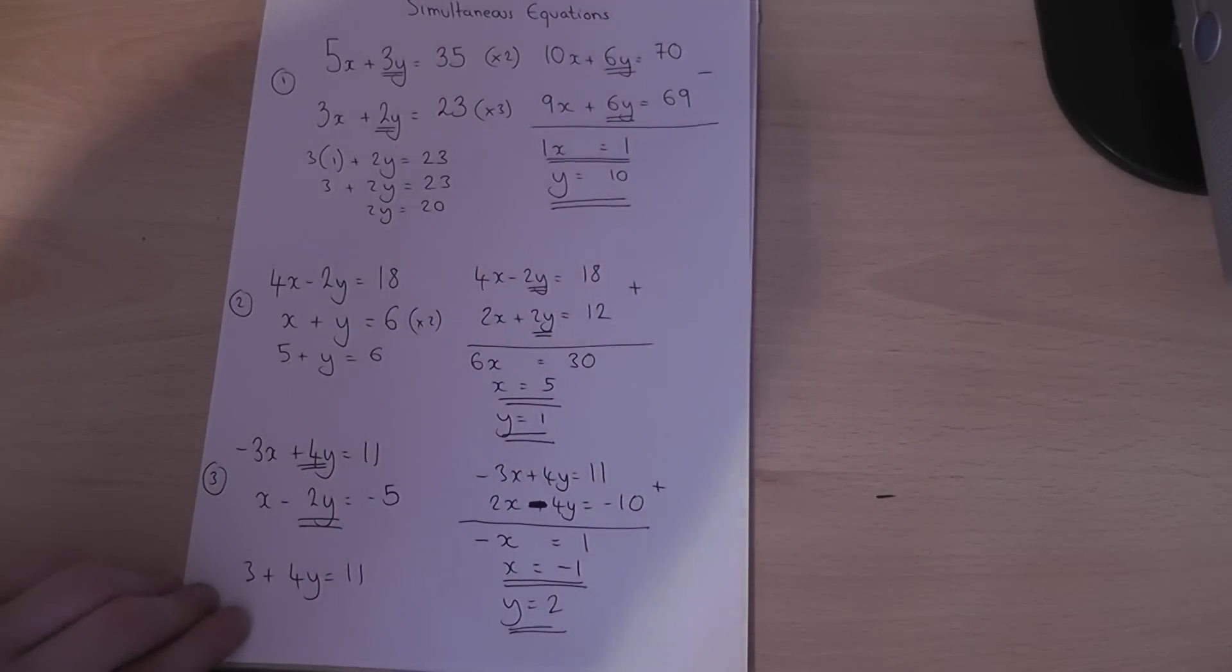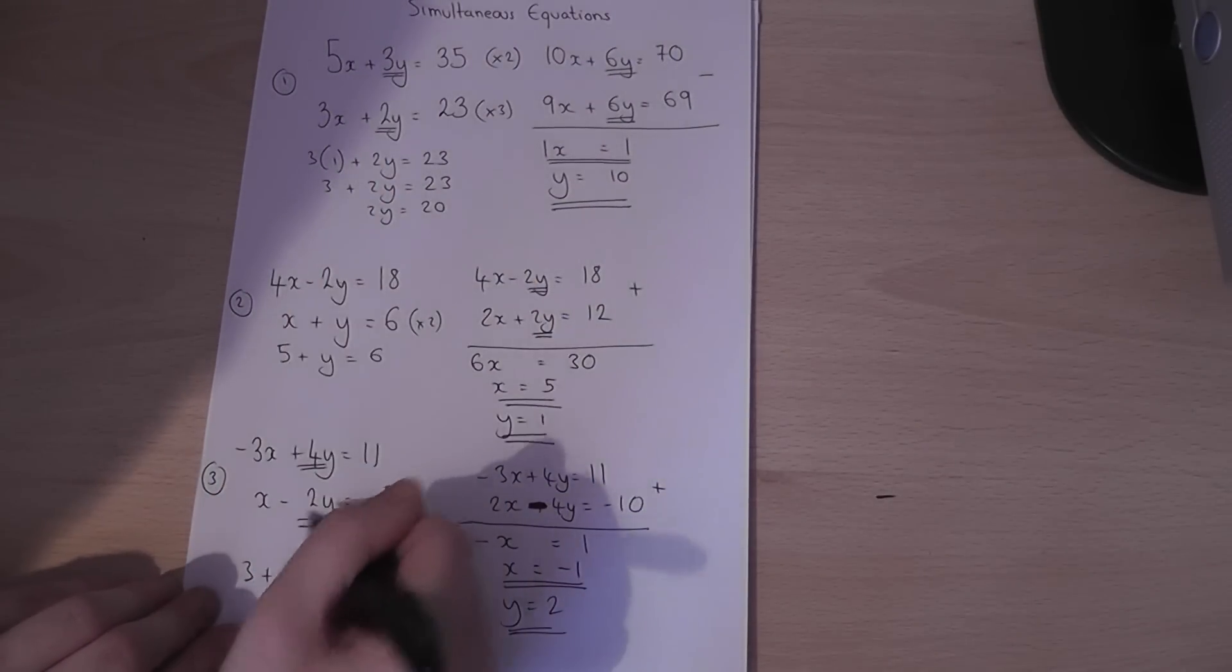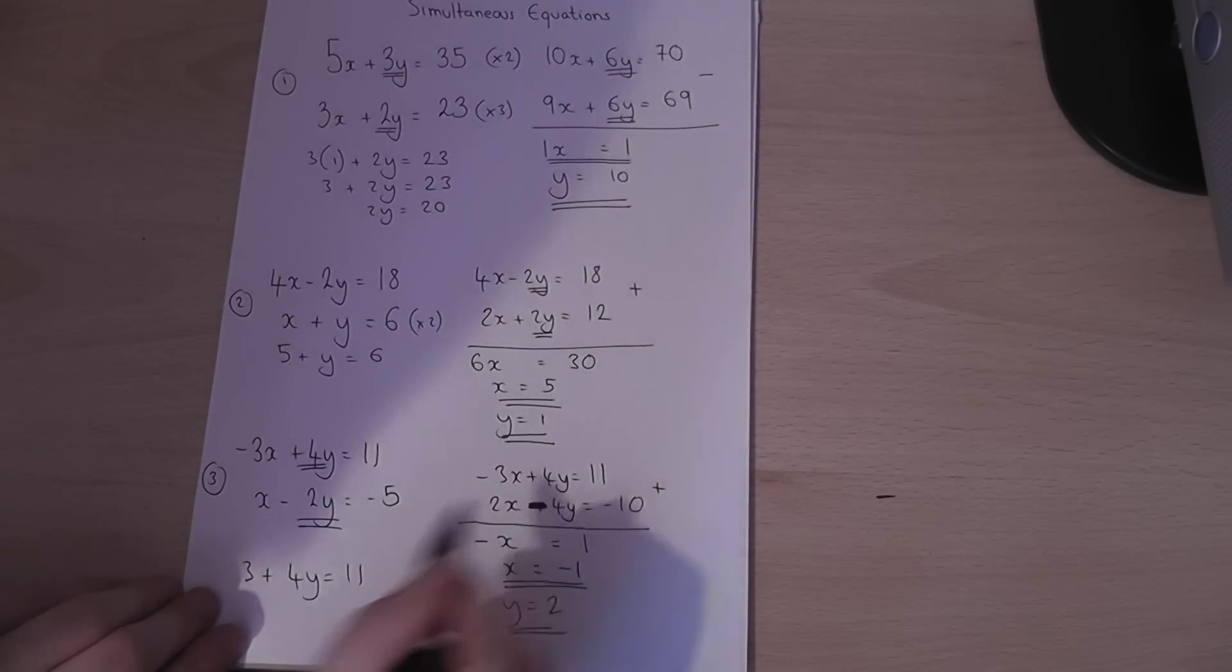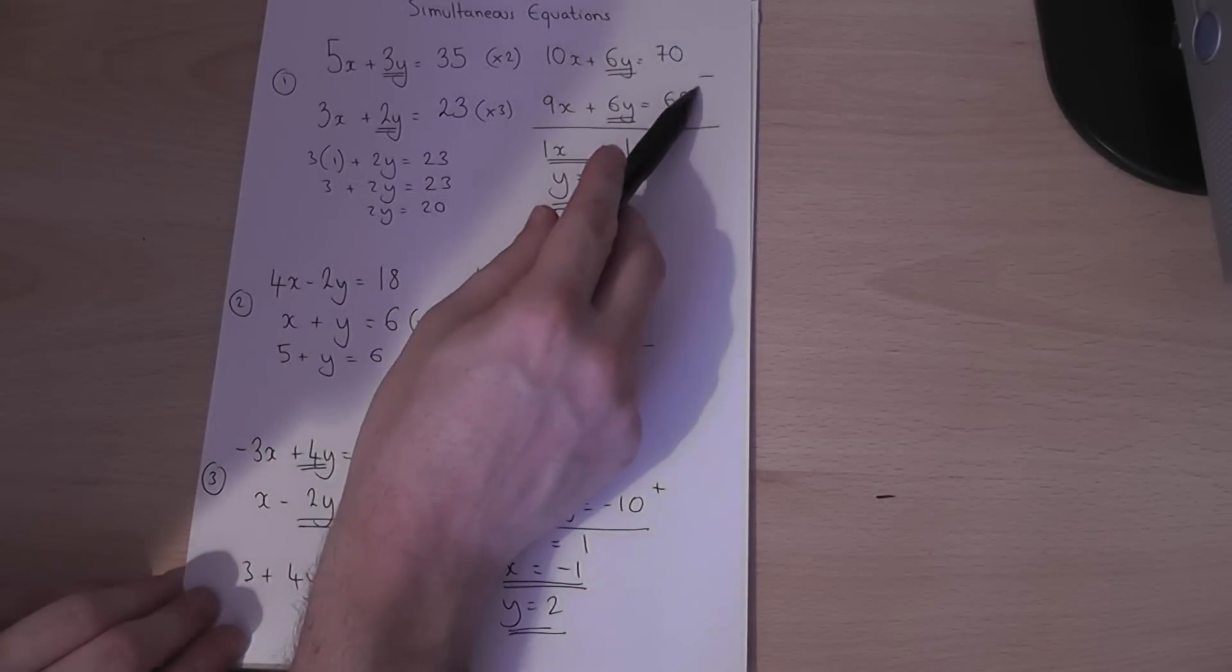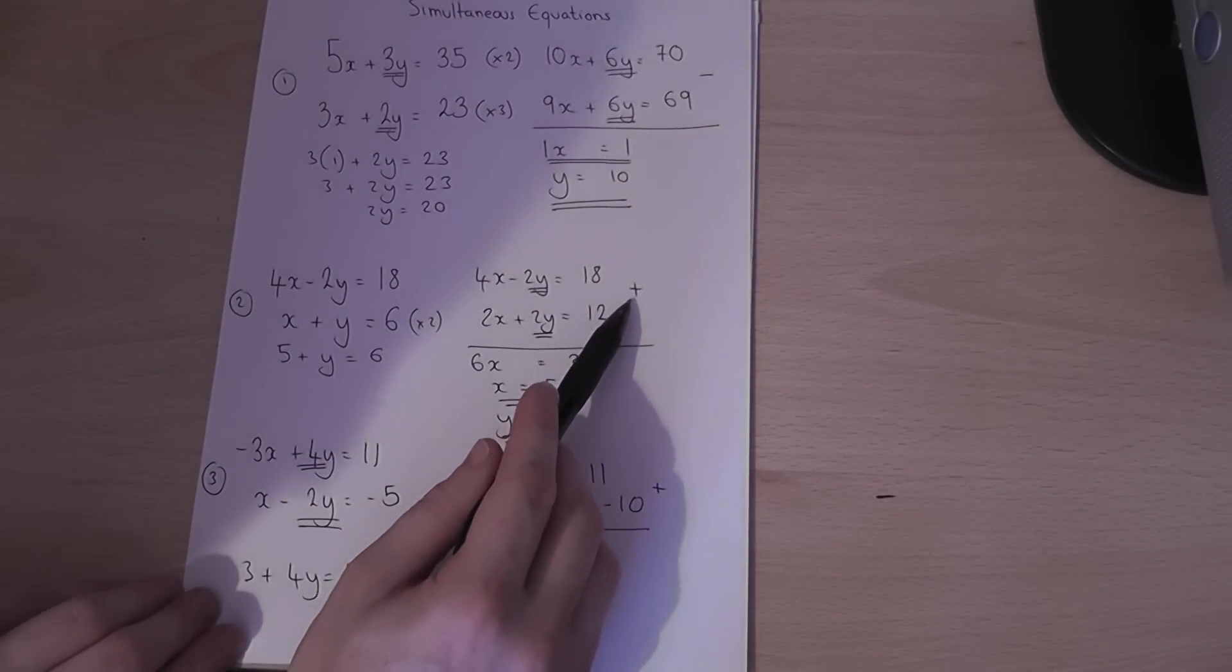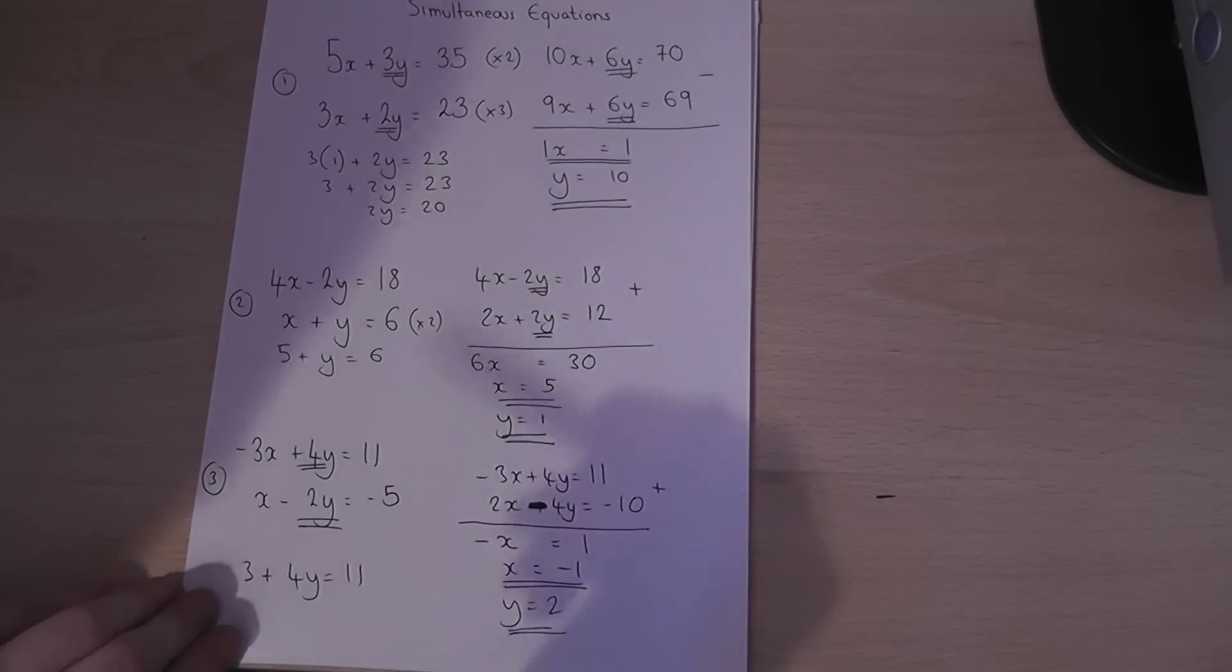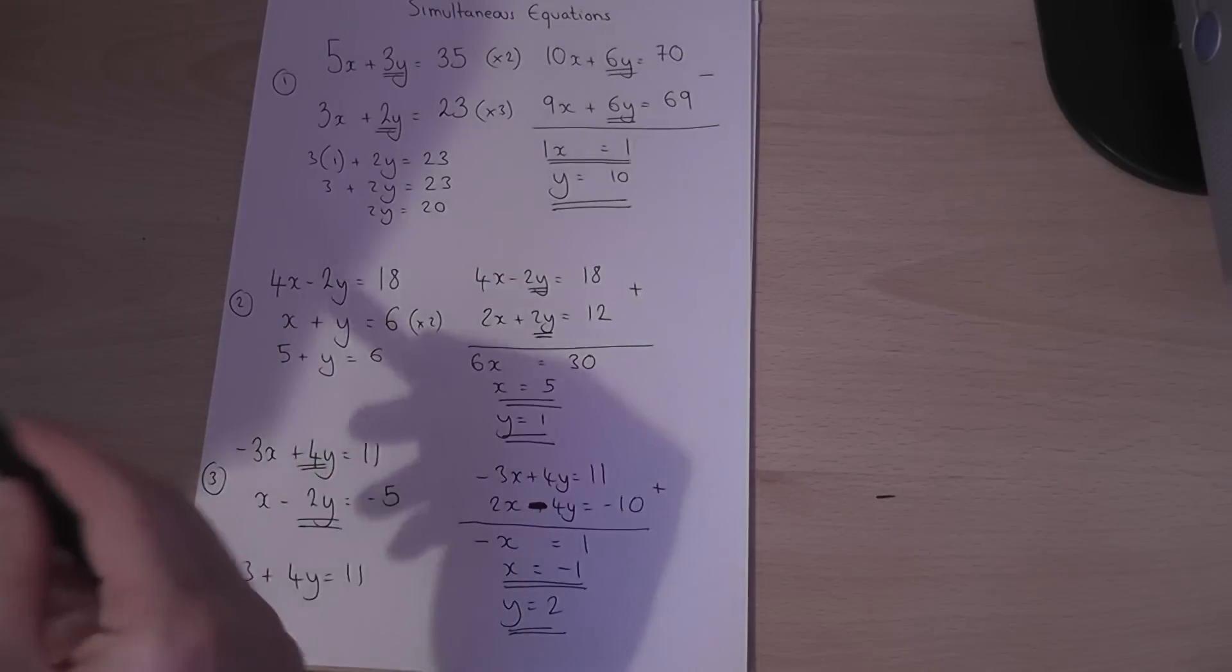So to summarize, look at the y part in each equation and think what can I do to the equations to make the numerical part of the y's equal each other. And then if they've got the same sign we subtract. If they've got different signs we add. The y's therefore cancel so we find x, and having got x we can then find y by putting x into one of the equations to find what y must equal.